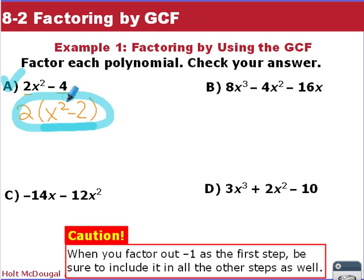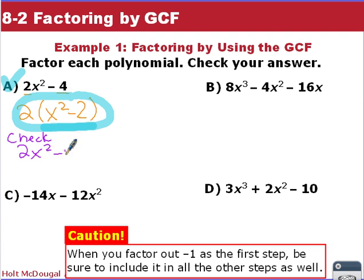We can check our work using the distributive property: 2 times x² is 2x², and 2 times negative 2 is negative 4. Yes, we're back to where we started.